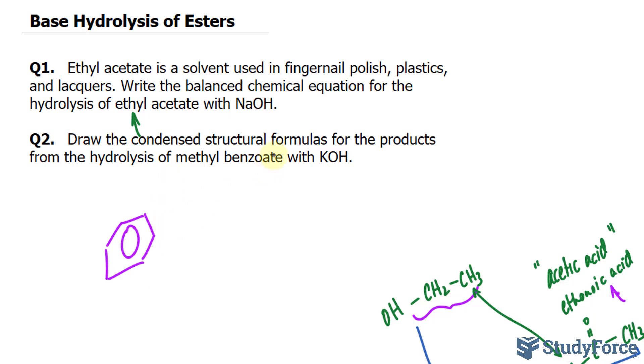and the OATE means that it was once a carboxylic acid. So we can say that we have carbon double bonded to oxygen, and this is single bonded to oxygen and a methyl. And we're mixing this with KOH, potassium hydroxide, which dissociates into potassium and hydroxide.